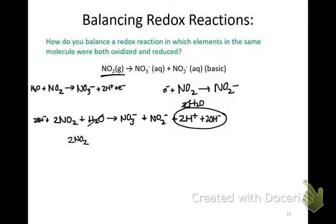We get two NO2's—because one is the oxidation half-reaction and one is the reduction half-reaction—plus two OH's because we're under basic conditions, producing both nitrate and nitrite and a molecule of water. Now our reaction is balanced under basic conditions.